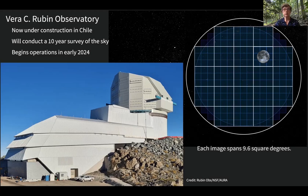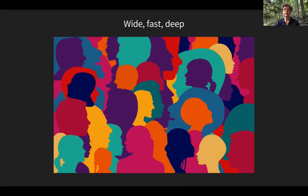The entire sky visible from our location will be imaged every three to four days for a period of 10 years. This will allow us to make deep images over time as the images are added together. Our survey is sometimes referred to as a wide, fast, deep survey for that reason. But we'd like to think of the audience we serve as wide, fast, and deep too.